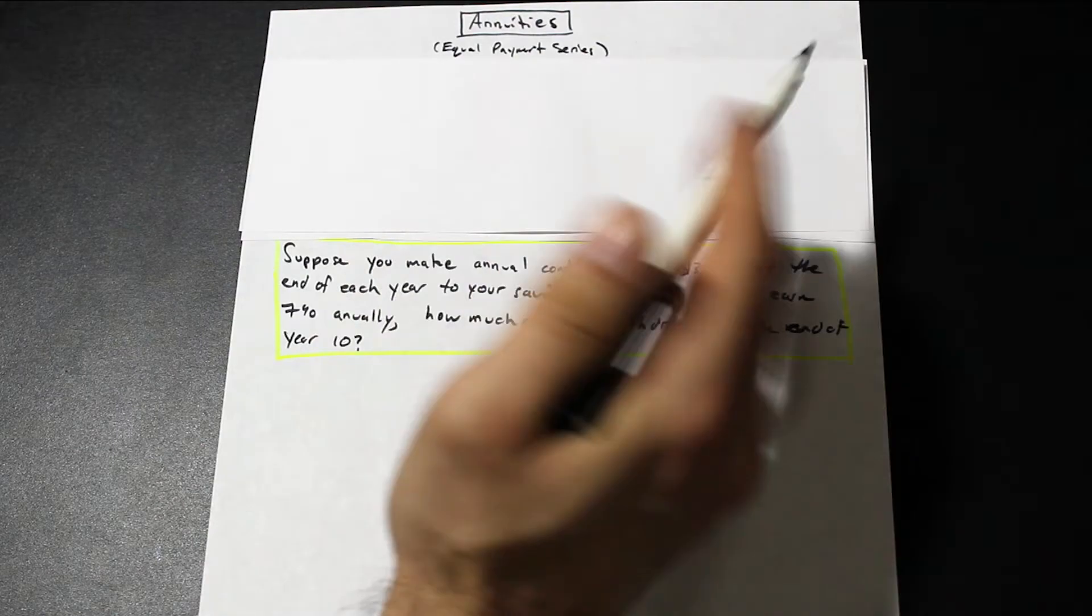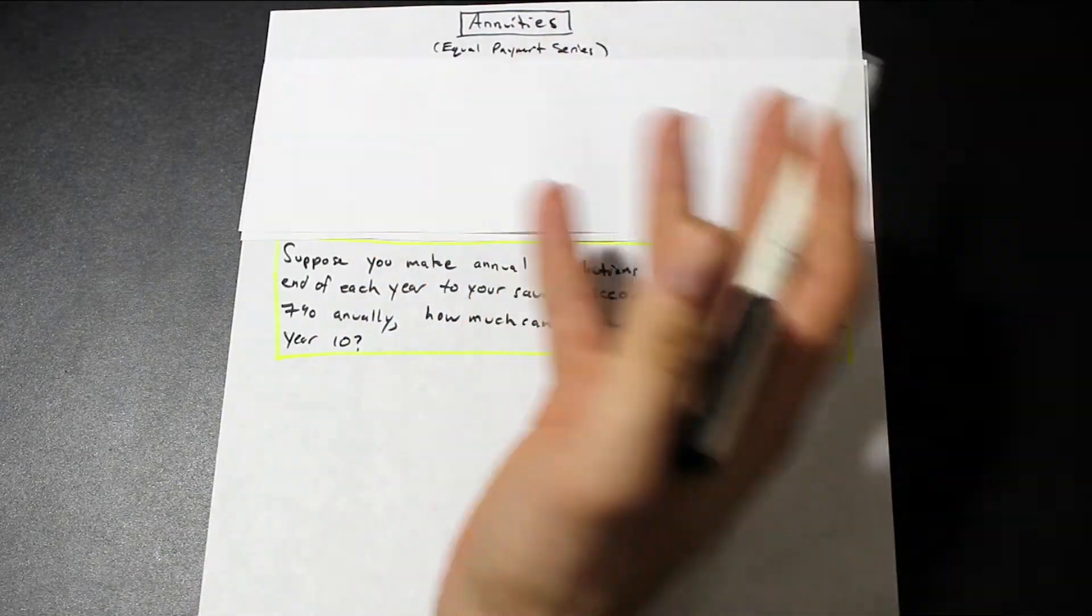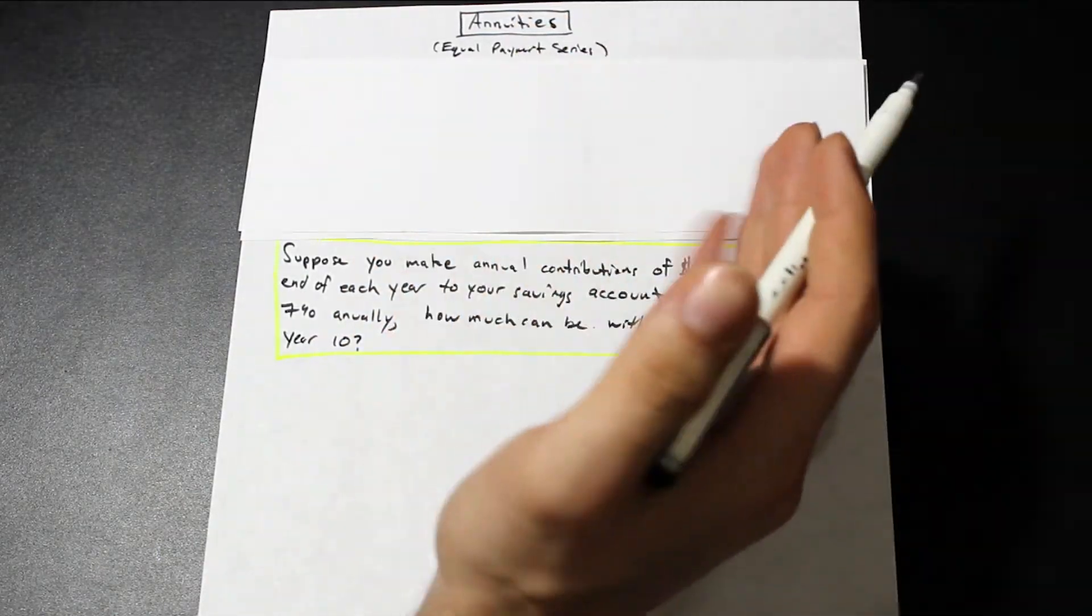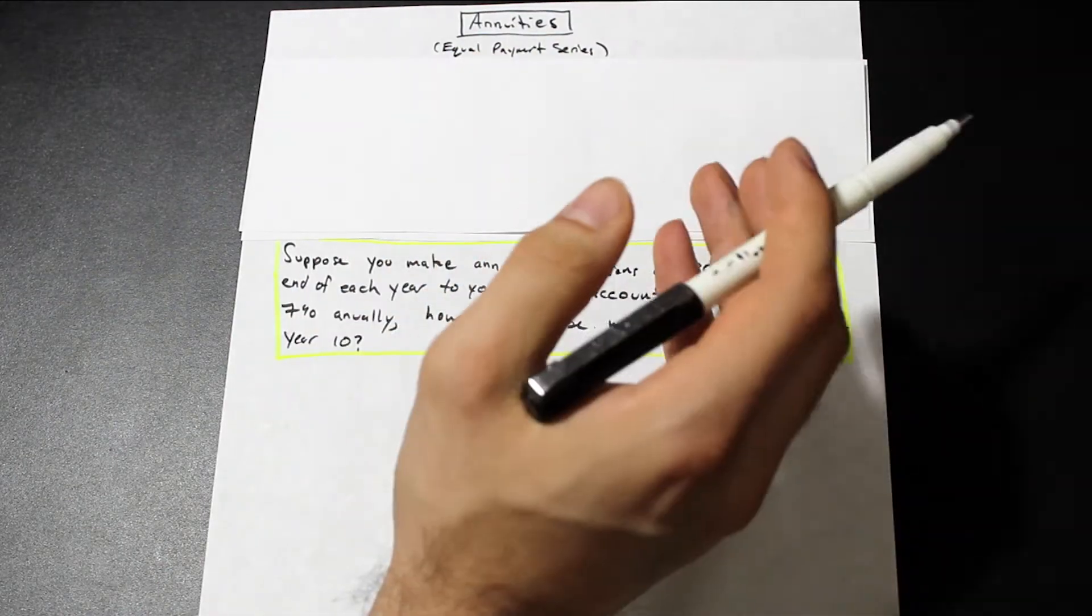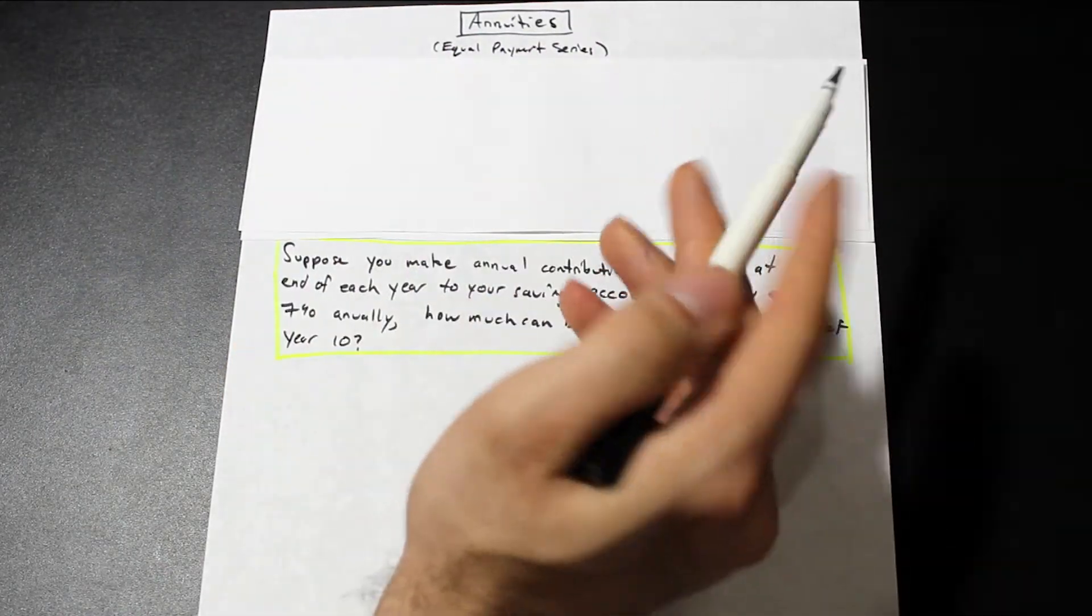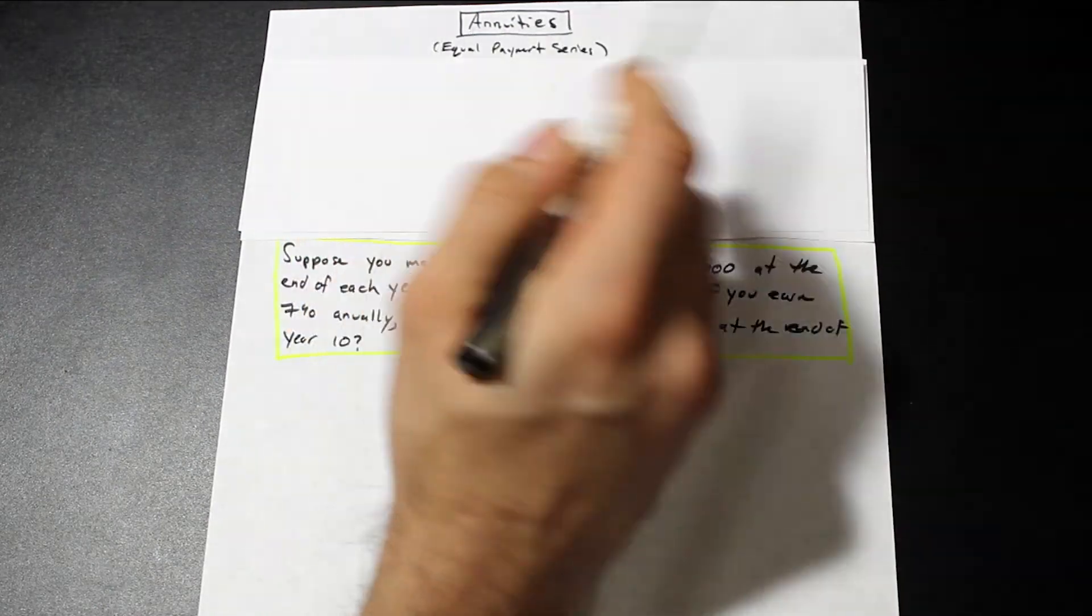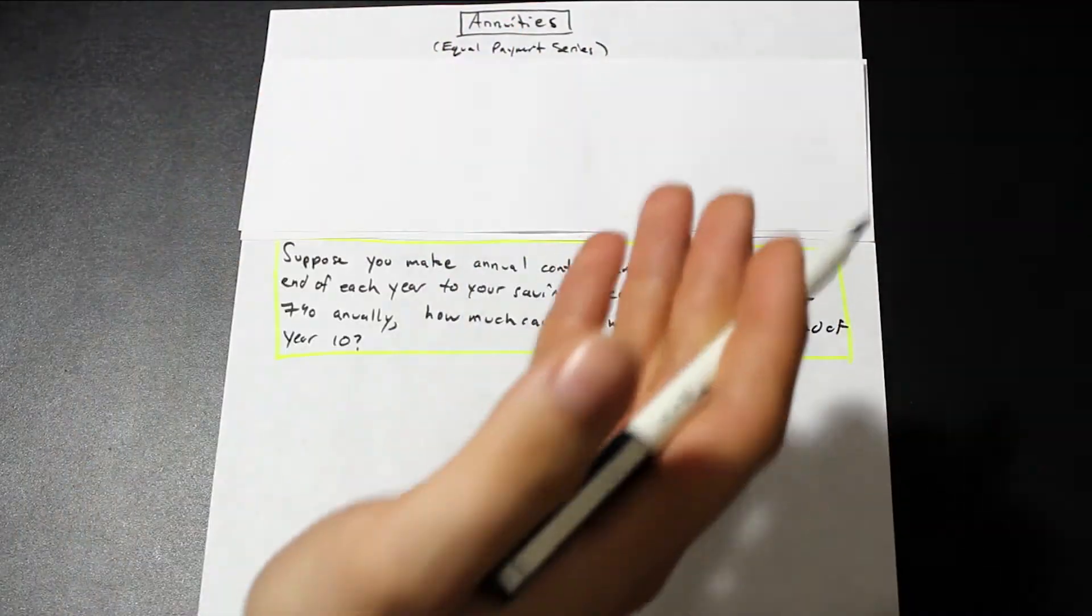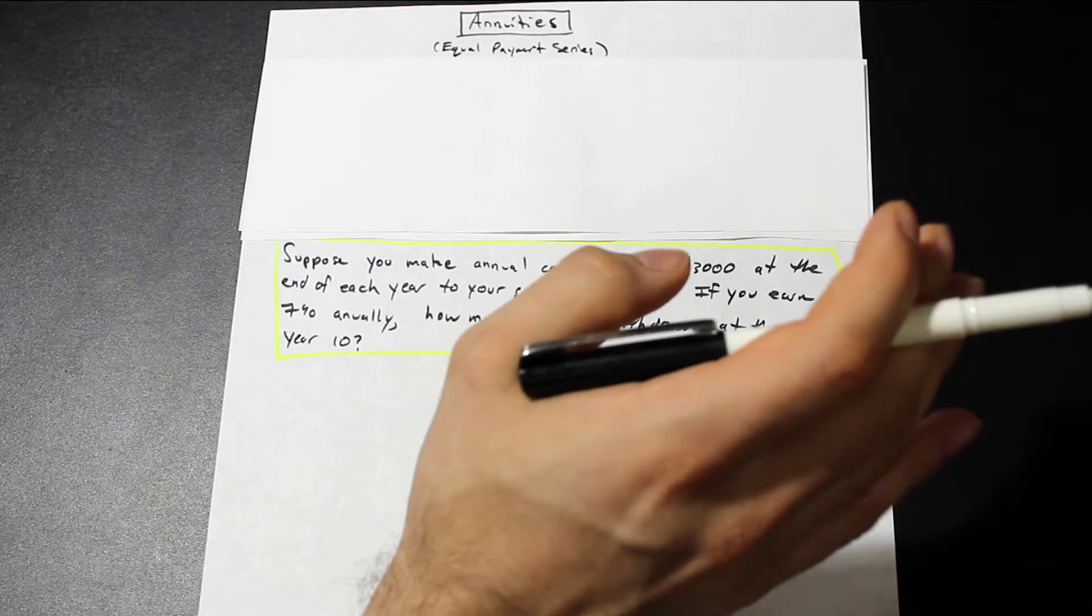what we could do is if we had a bunch of payments in, for example, five or six years in the future, each year we had a different payment or even the same payment, we could take those as the sum of the individual payments at some year. But when we have an annuity or we have a bunch of payments that are the same, we can just use one formula and it makes it a lot easier.